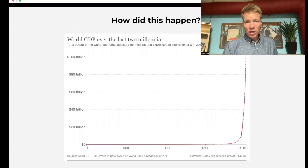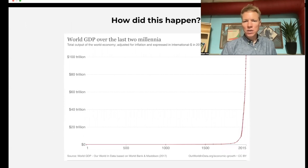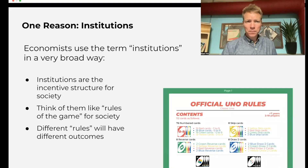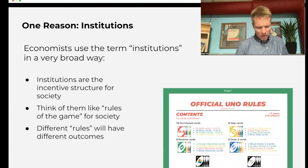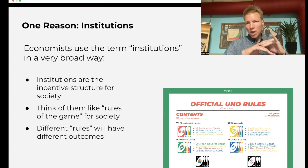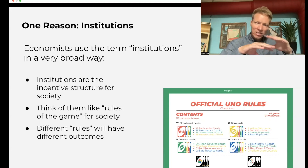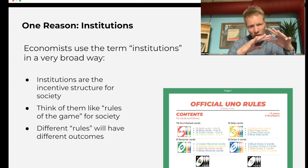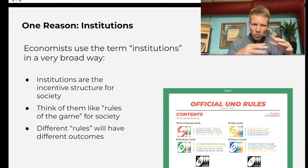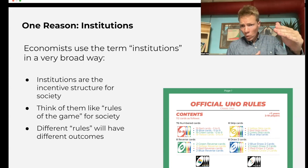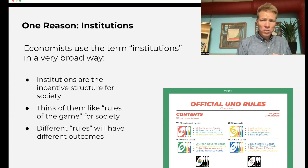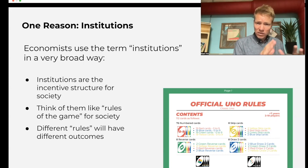Reminding students of economic growth — we've seen this fantastic explosion in economic growth in the past 200 years. One potential reason that economic historians point to is institutions. Economists use the term institutions in a very broad fashion: basically the incentive structure, both the formal and informal rules of society — the rules of the game. With that bell ringer, what we're trying to show is that depending on how you set the rules up, you're going to have very different outcomes.